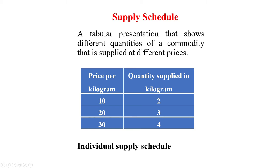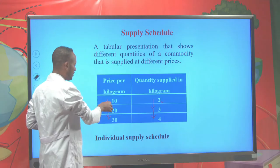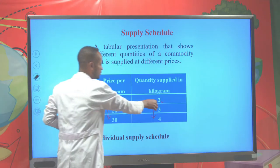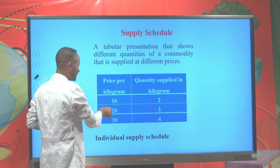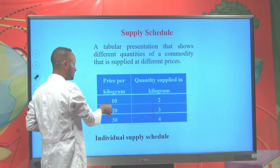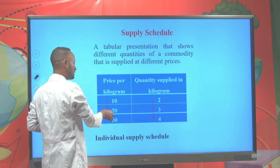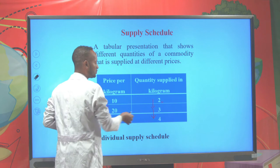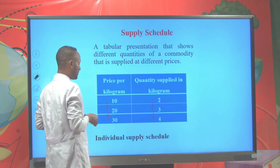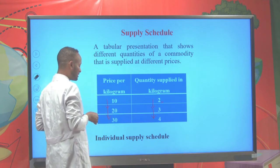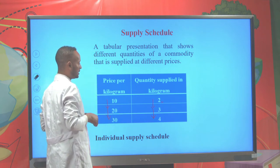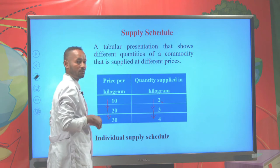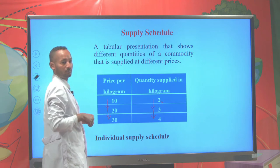Here, when the price of a kilogram of orange is 10, then the farmer supplies 2 kilograms. And as price increases from 10 to 20, then the supply of orange increases from 2 to 3. And when the price increases to 30, then the quantity supplied for orange increases from 3 kilograms to 4 kilograms.